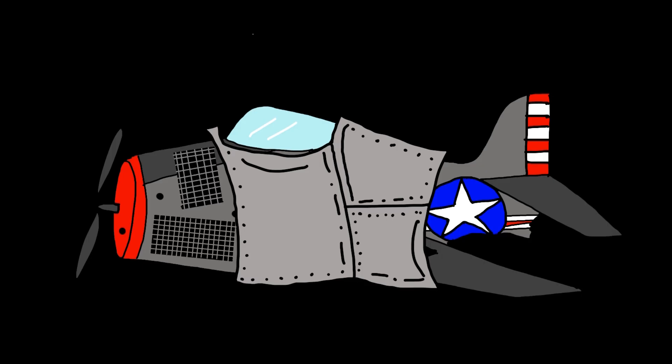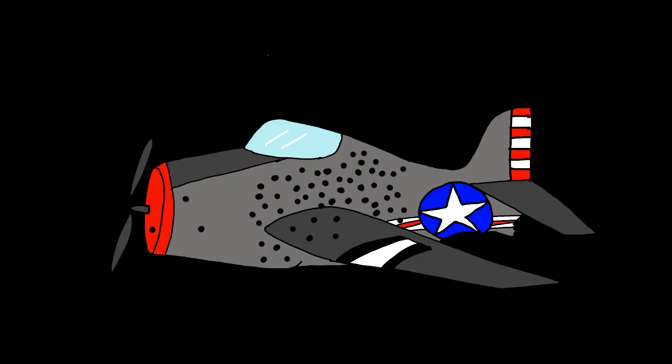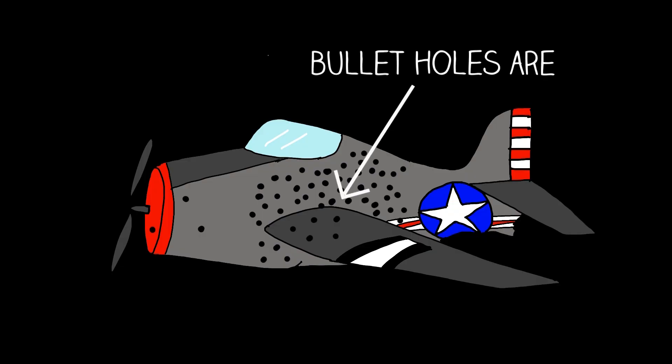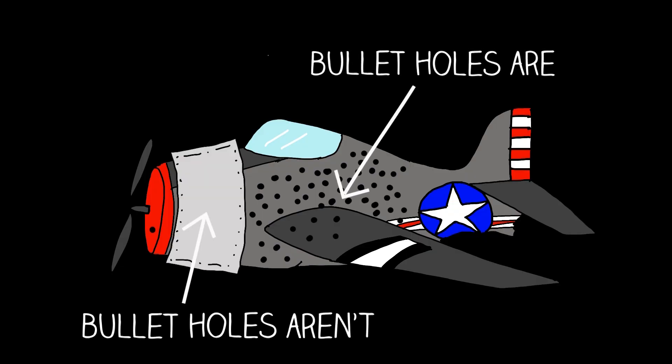But exactly how much more or less armor to put, they didn't know. That's why they came to Abraham Wald. But they didn't get the answer they expected. He told them that the armor doesn't go where the bullet holes are, but where the bullet holes aren't — the engines.